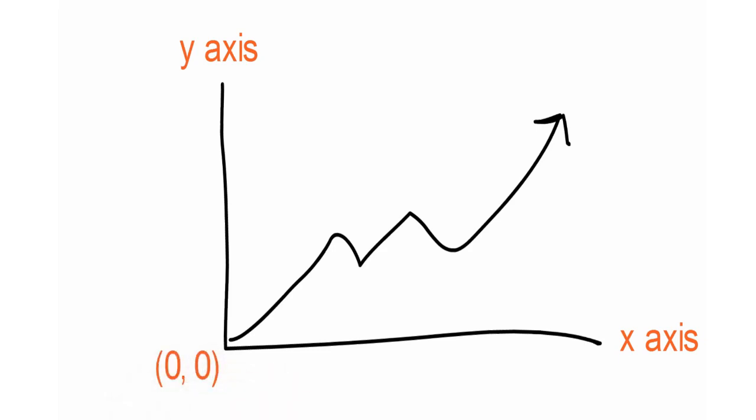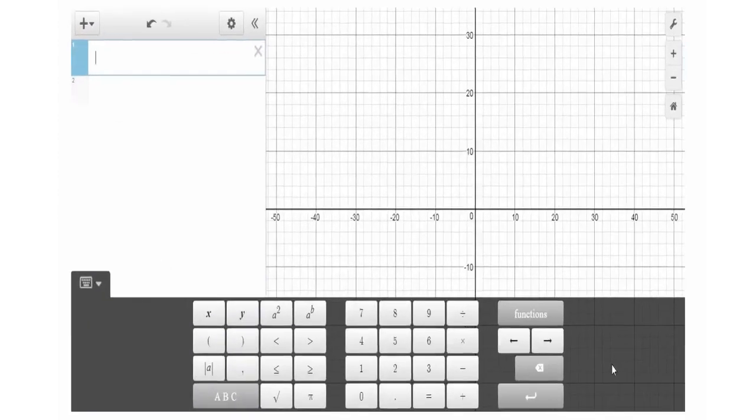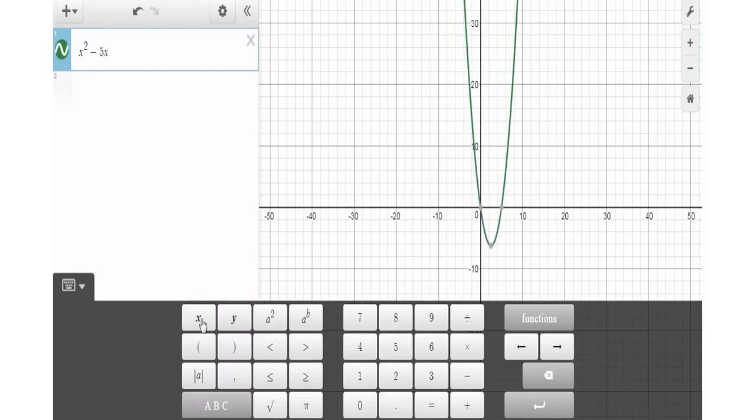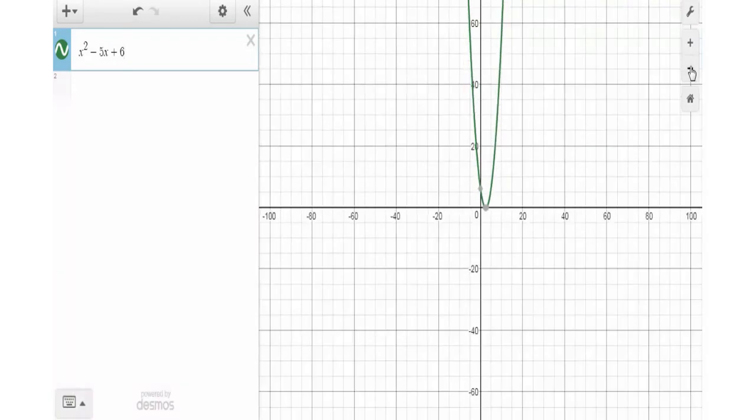To understand the second characteristic, let me open a graph here. Let me write down an equation: x² - 5x + 6. If you look at the graph, it's open from the upside, which means it's infinite in the upper side.